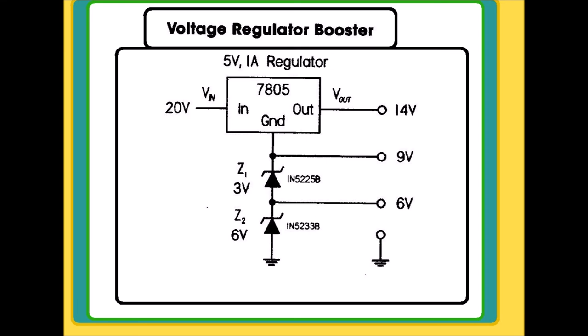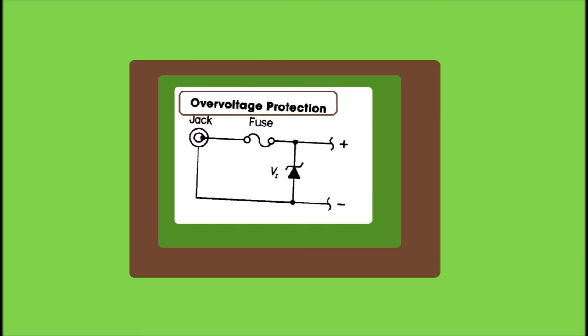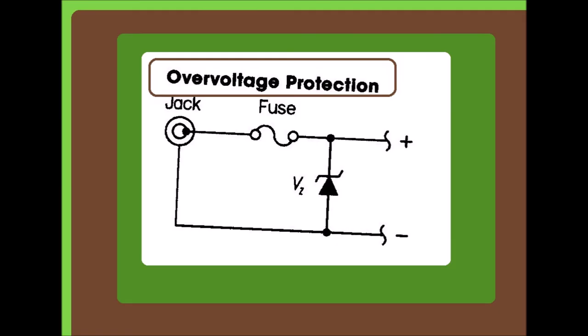Here's another circuit. It's called an over-voltage protection circuit. If excessive voltage is applied to the jack, say via an incorrectly rated wall plug-in supply, the Zener diode will conduct until the fuse is blown.